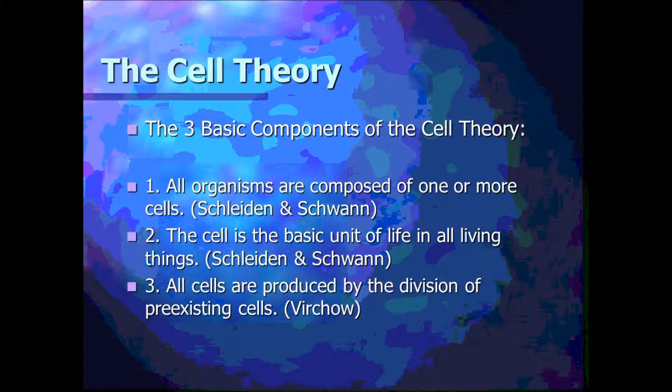That brings us to the cell theory. A theory is something very different from a law — a theory is something that has been proven over and over again, yielding the same results every time, even though it could potentially be proven incorrect. These are the three parts of the cell theory.